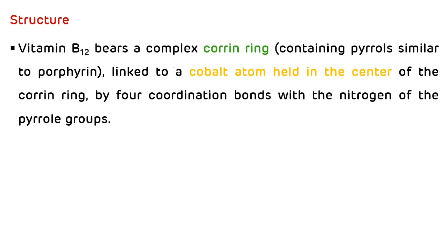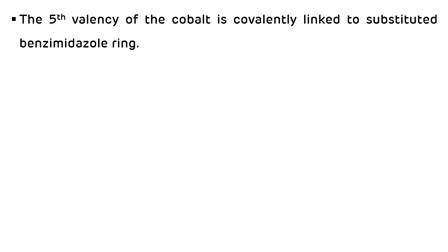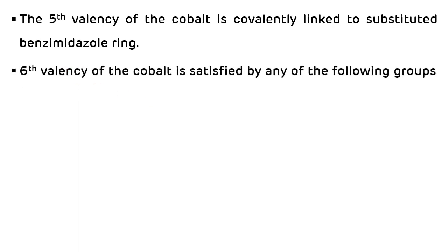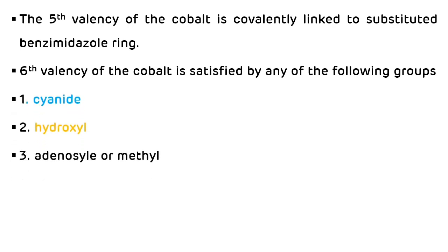Regarding the structure of vitamin B12: vitamin B12 bears a complex corrin ring linked to a cobalt atom held in the center of the corrin ring by four coordination bonds with the nitrogen of the pyrrole groups. The fifth valency of the cobalt is covalently linked to a substituted benzimidazole ring, and the sixth valency of the cobalt is satisfied by any one of the following groups: cyanide, hydroxyl, adenosyl, or methyl.